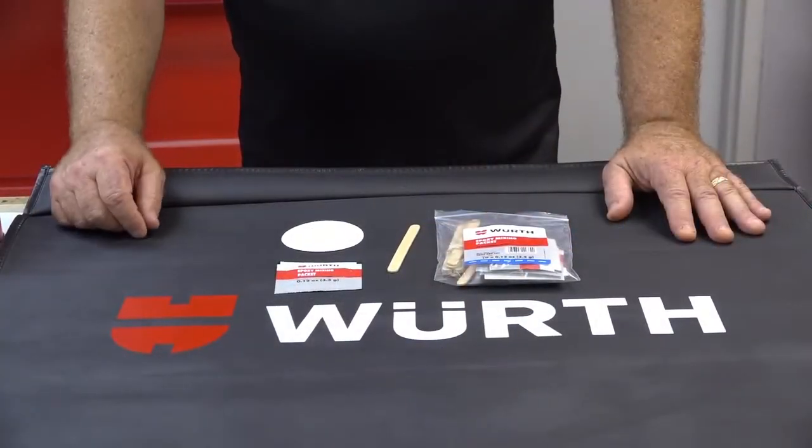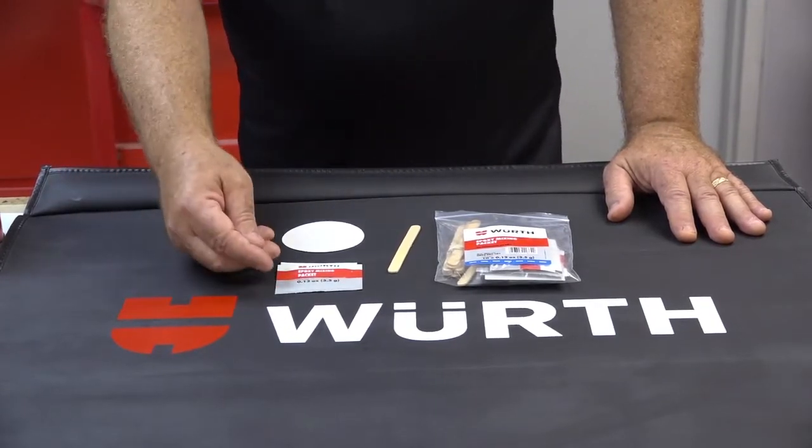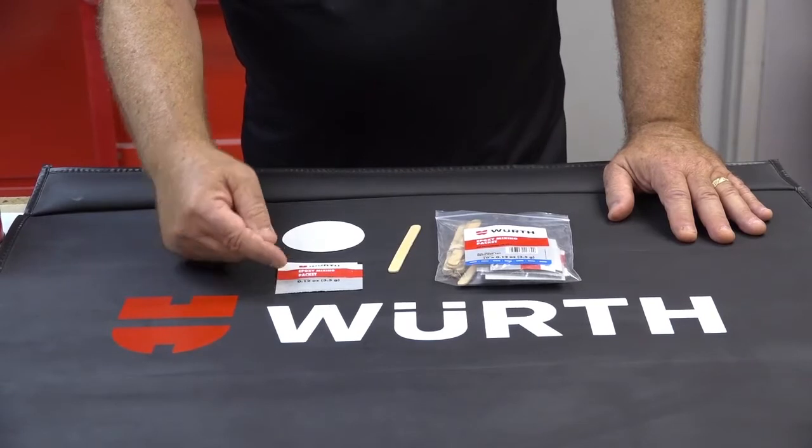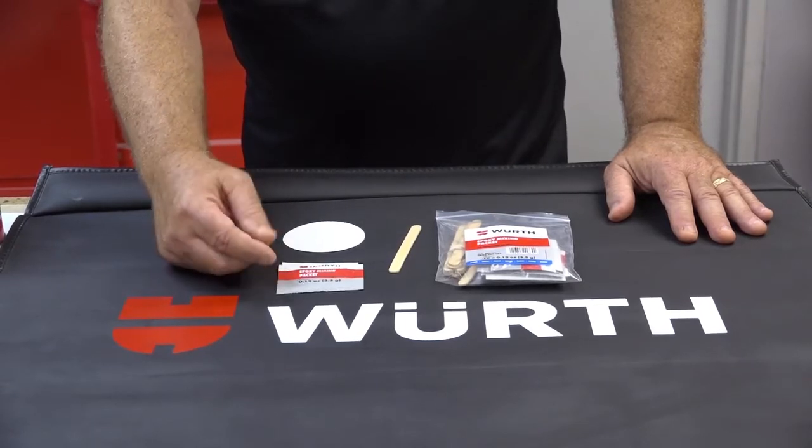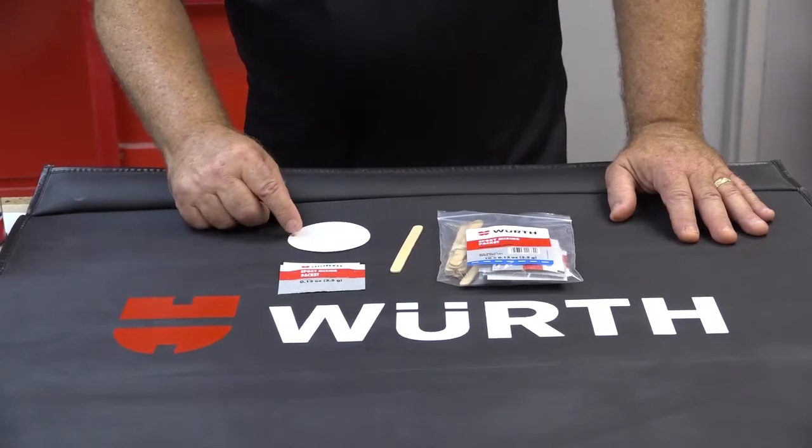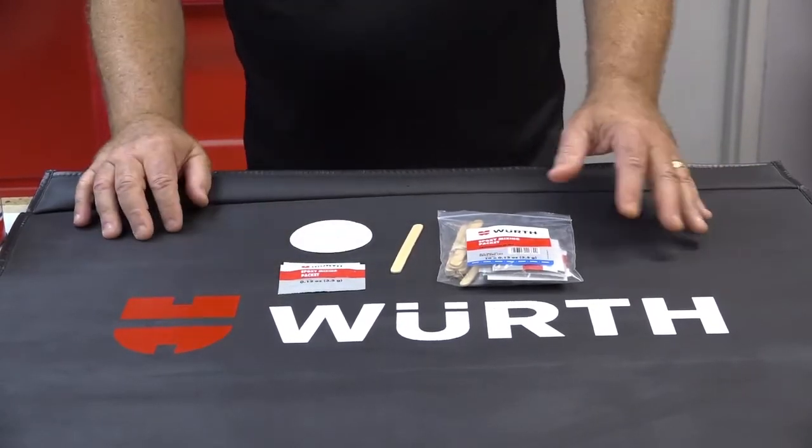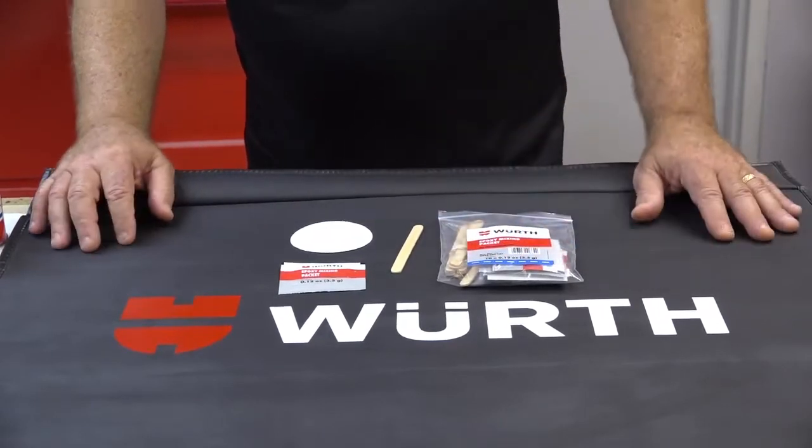Worth USA is proud to introduce a new product, the epoxy mixing packet. The epoxy mixing packet is a sealed two-part epoxy resin that makes a single repair. The product comes with a mixing palette and a mixing stick. The product is sold per piece, but you must buy 10. This is how they come to you.